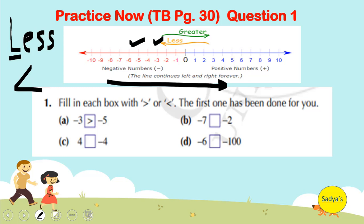B part. Minus 7 and minus 2. Minus 7 is here and minus 2 is here. And since minus 7 comes first, it is smaller. So minus 7 is smaller than minus 2.